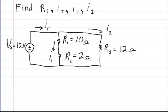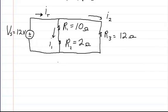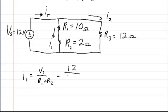In order to solve for the current I1, all you need to do is say the current in branch 1 is equal to the voltage over branch 1, which is Vs, divided by the total resistance of this branch, which is R1 and R2. So you have R1 plus R2. That's 12 volts over 10 ohms for R1 plus 2 ohms for R2, so that's 12 volts over 12 ohms, which gives you 1 amp.